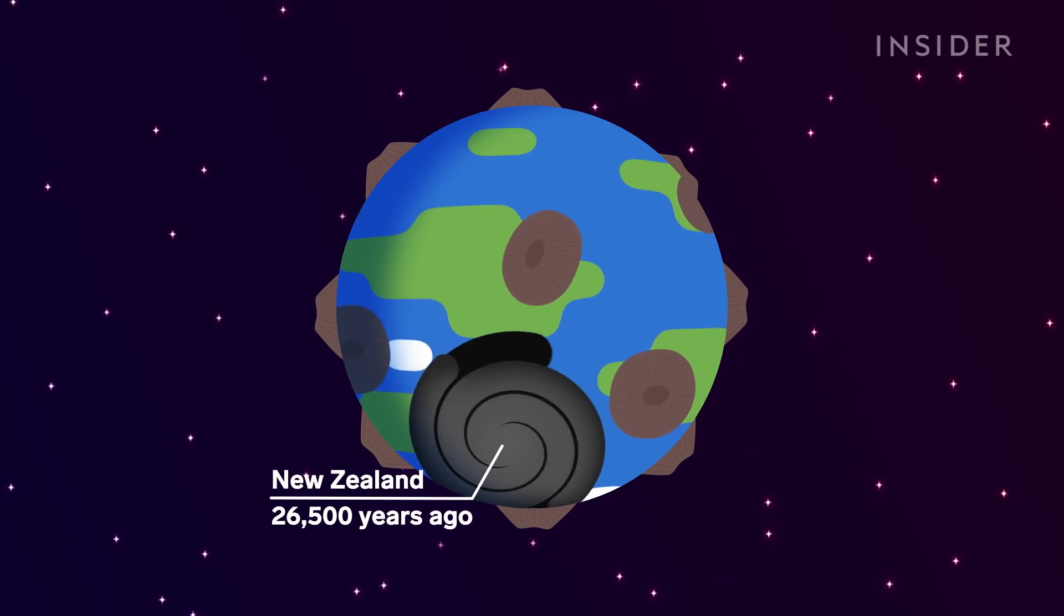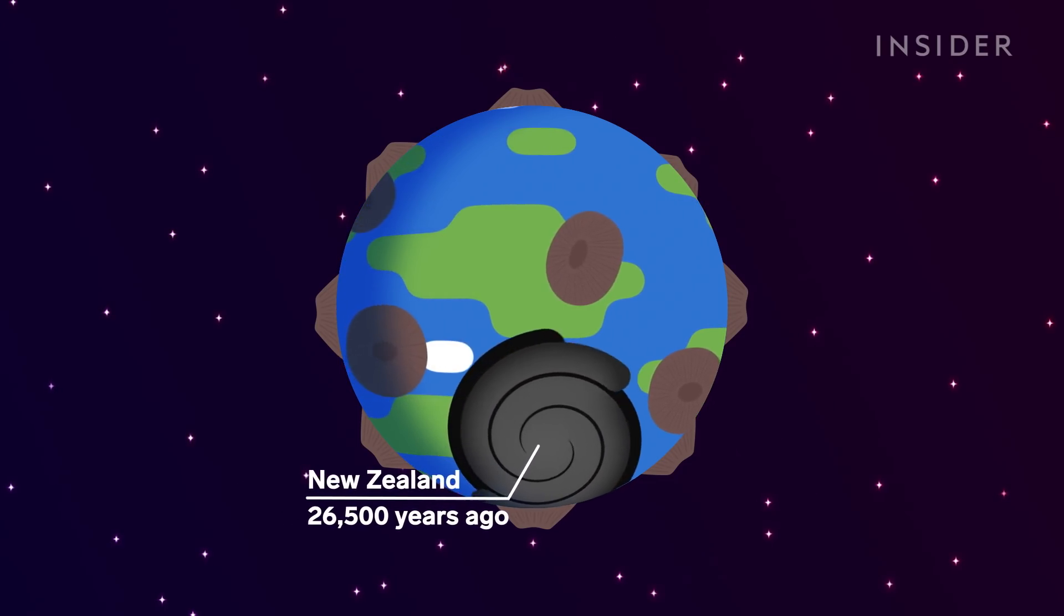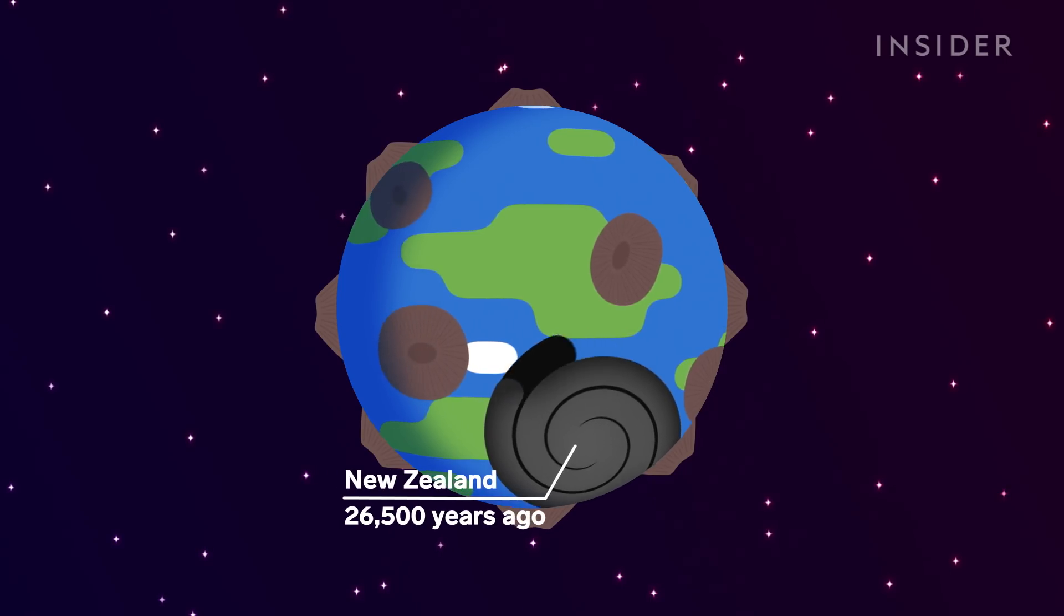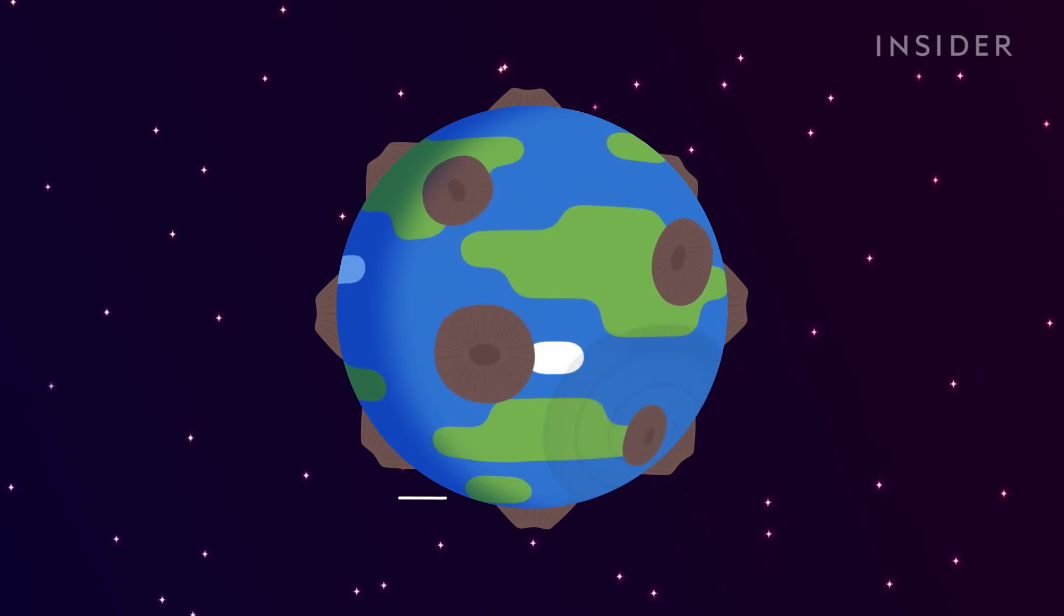And the last one went off 26,500 years ago in New Zealand, blanketing most of its island in a layer of thick ash.